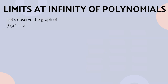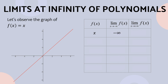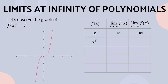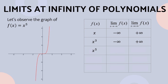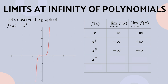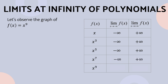Let us observe the graph of f(x) = x. As you can see, the left-hand limit approaches negative infinity, whereas the right-hand limit approaches positive infinity. For the graph of f(x) = x³, the left-hand limit approaches negative infinity, whereas the right-hand limit approaches positive infinity. The graphs of x⁵, x⁷, and x⁹ also show the same behavior: the left-hand limit approaches negative infinity and the right-hand limit approaches positive infinity.